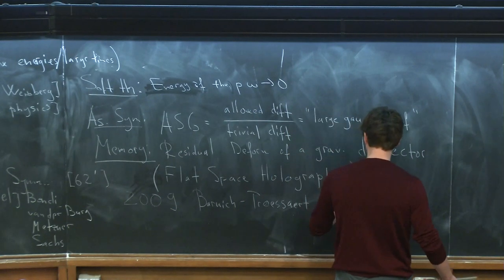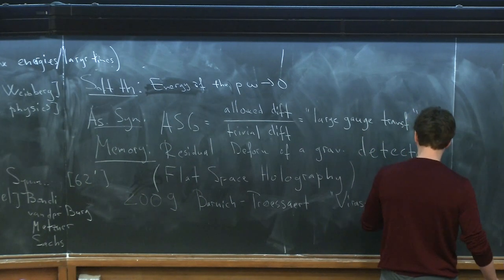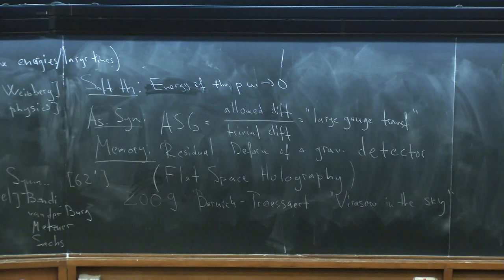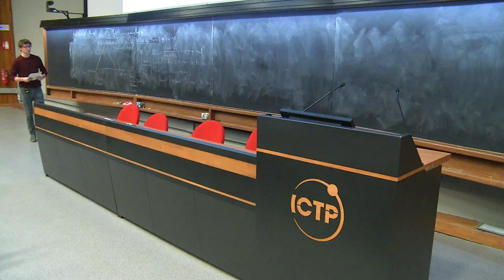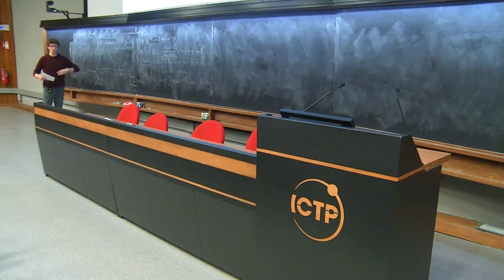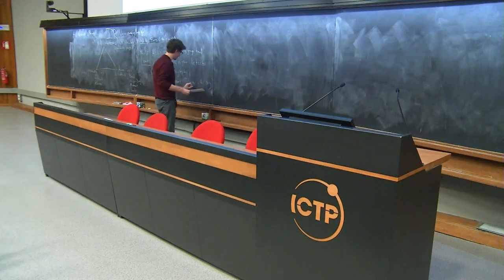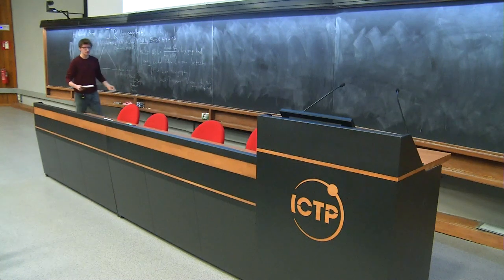Barnish and Troyesa discovered a sort of Virasoro symmetry in the sky. They redid the analysis of asymptotic symmetries and found that, similarly to the stories from the 1970s — as mentioned in the previous lecture — you can extend the group of asymptotic symmetries, extending the group of global conformal transformations on the sphere to local ones. They called these super rotations. This was very suggestive. Do we have a two-dimensional CFT?